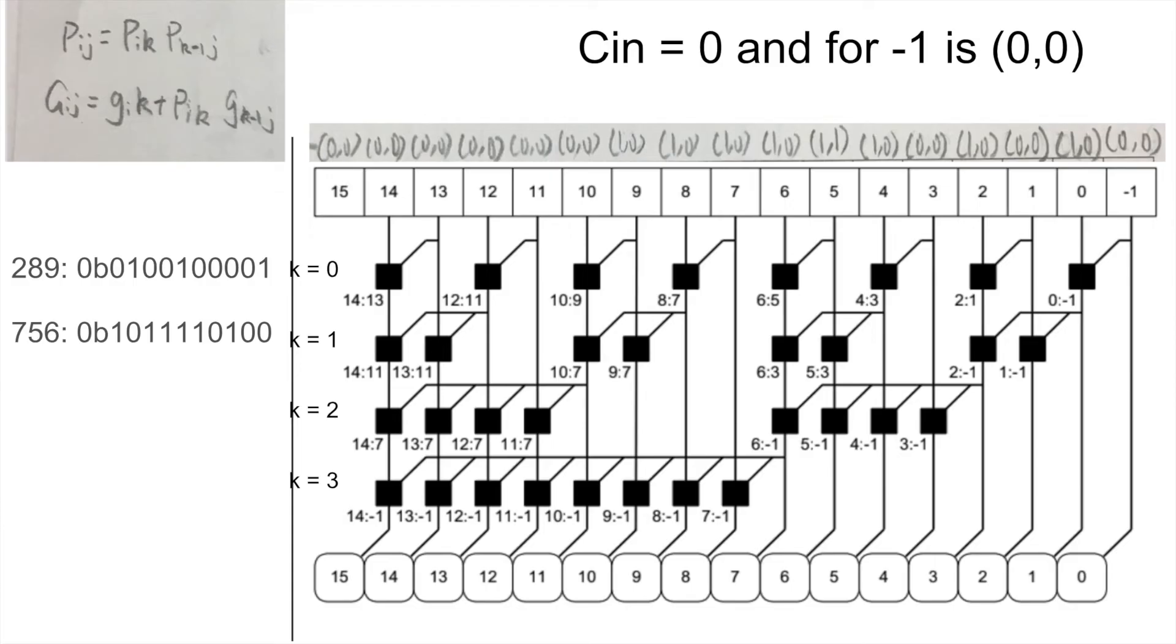And then after you fill in the top row, it will go to the level 1, k equals 0 in this case. You will do the same calculation with the pij equals to the pik and with the pk-1j. Then you will do the same thing for the g. You just have to follow each index carefully. And then you will generate 0, 0.